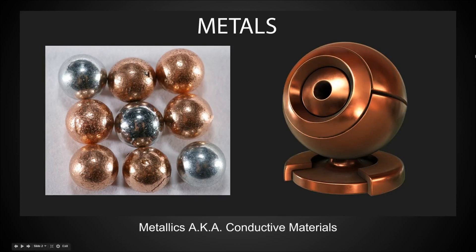Metals or metallics are any material that's conductive. The reason why metals are metals, the reason why they look the way they do, is because they are conductive — conductive to electricity — and as a result they interact with light in a weird way.